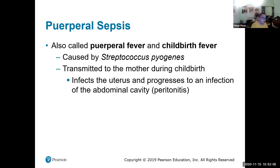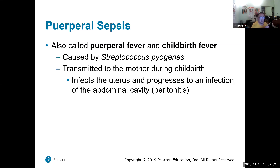Puerperal fever, or childbirth fever, is caused by Streptococcus pyogenes. It's transmitted to the mother during childbirth, infects the uterus, and eventually the whole abdominal cavity, which is called peritonitis. One of the most famous cases is Jane Seymour of England — she was one of Henry VIII's six wives and died giving birth to the heir, Edward.